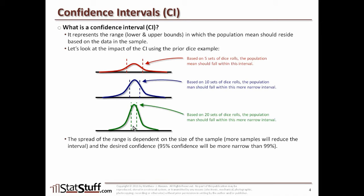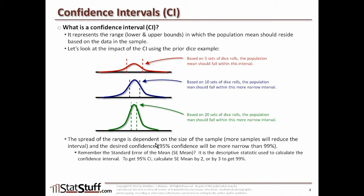The spread of the range is dependent on the size of the sample — how many data samples we've collected — and the desired confidence level. For example, 95% confidence is going to be more narrow compared to 99% confidence, which is going to be a little bit wider. Remember the standard error of the mean, or SE mean — that's the descriptive statistic used to calculate the confidence interval. To get a 95% confidence interval, you multiply the SE mean by two; for a 99% confidence interval, you multiply the SE mean by three.